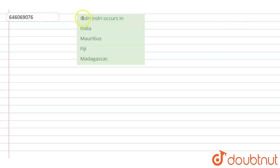The question is: Indri occurs in - option A: India, B: Mauritius, C: Fiji, D: Madagascar. If you'll see, Indri is a generic name. It is the generic name of an organism. It is a primate, or we can say that it is an actual organism.